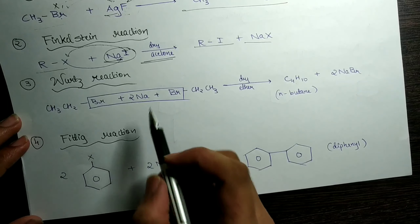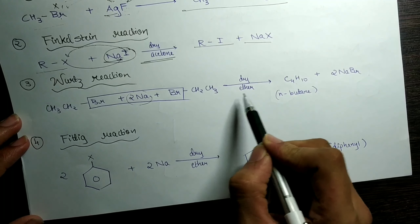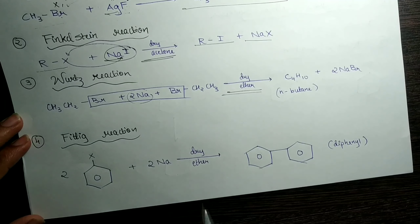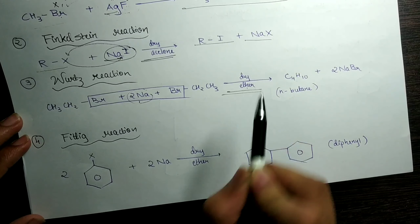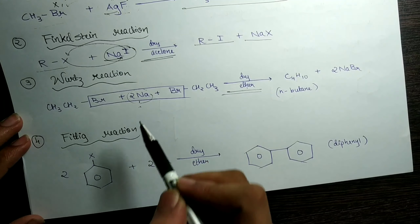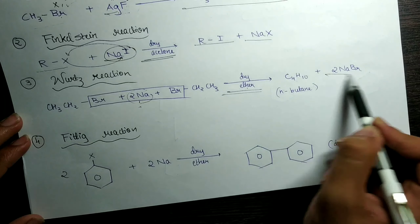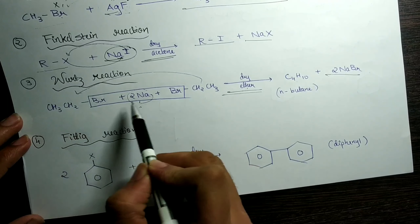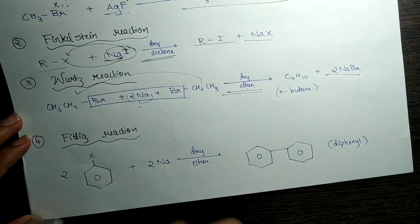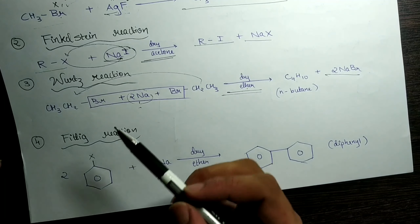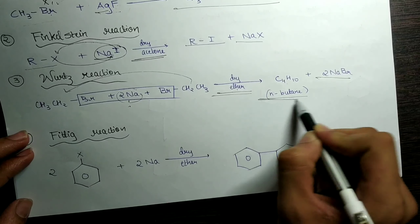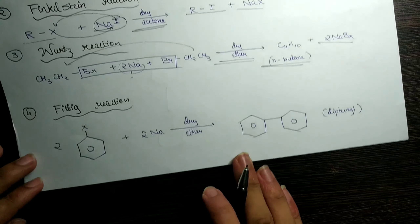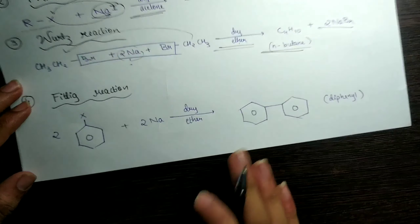The Swartz reaction is just an interchange of halogens: for example, CH₃Br + AgF. We can call the halogens X1 and X2 — X2 takes the place of X1 and X1 takes the place of X2. That is the only reaction. Just remember: wherever you see AgF, the reaction will be the Swartz reaction, and there should be an interchange of halogens.